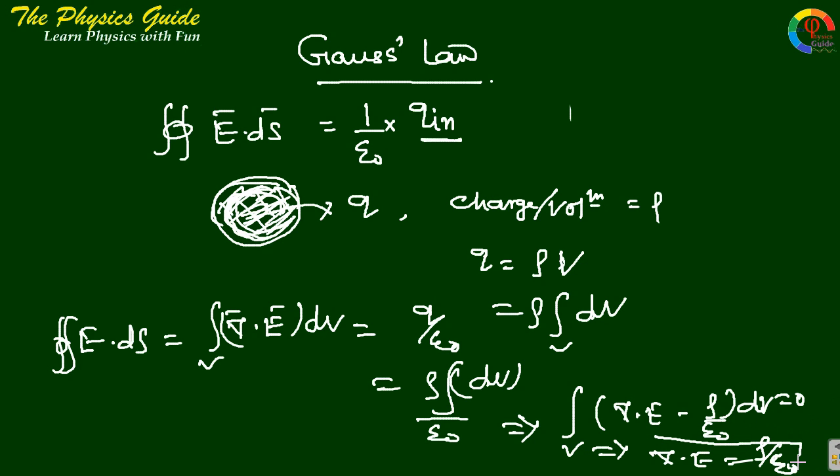This is the differential form of Gauss's law. The integral form and the differential form are equivalent. Del dot E equals rho by epsilon naught.